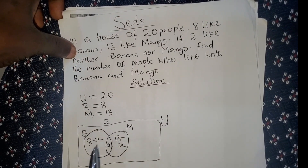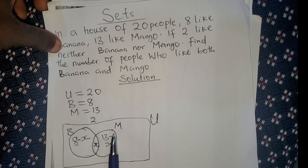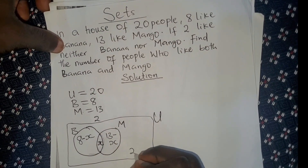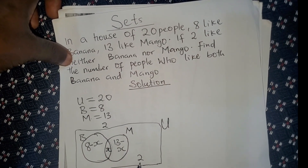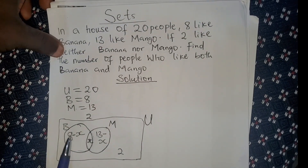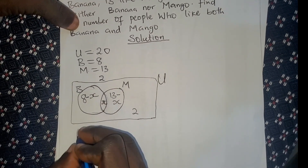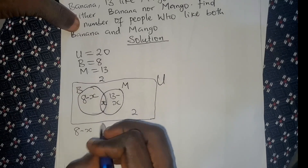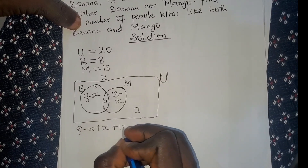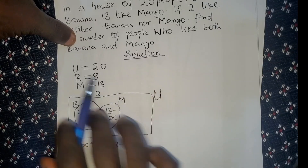Let's represent everything here as the universe U. The 2 people who don't like banana and don't like mango — they won't be inside either circle. They go outside the circles but still inside the universe. So everything here, including these 2, is still inside the universe, and the universe is 20. That means everything here must equal 20. Adding everything: 8 minus x, plus x, plus 13 minus x, plus 2 equals 20.